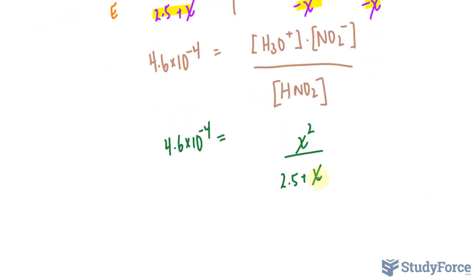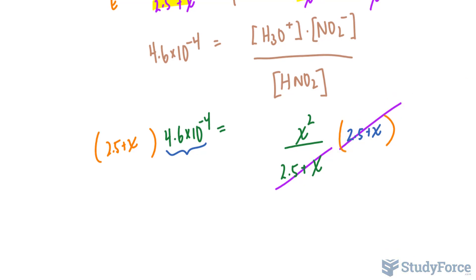I'll multiply both sides by 2.5 plus X. And by all means, since K sub A, this number, is really small, there are times where you can completely ignore this X and pretend that it doesn't even exist. But I'll take the honest route. I'll multiply both sides by 2.5 plus X. Look what happens. This expression and this expression completely cancels out, leaving you with X squared on the right side.